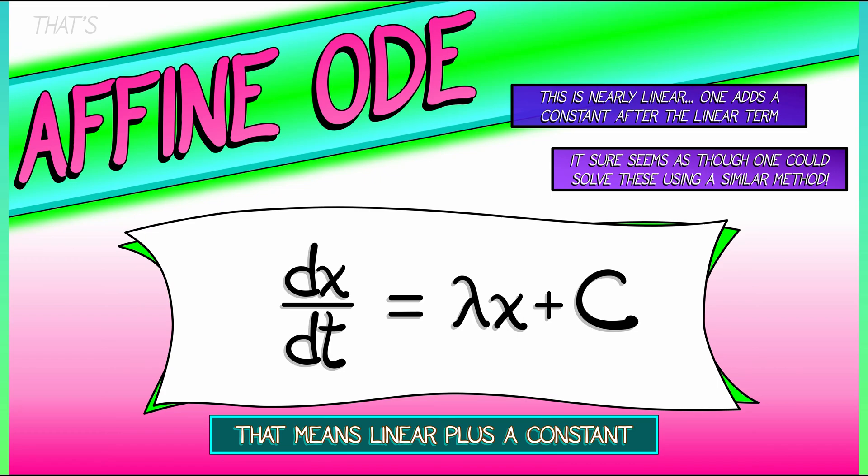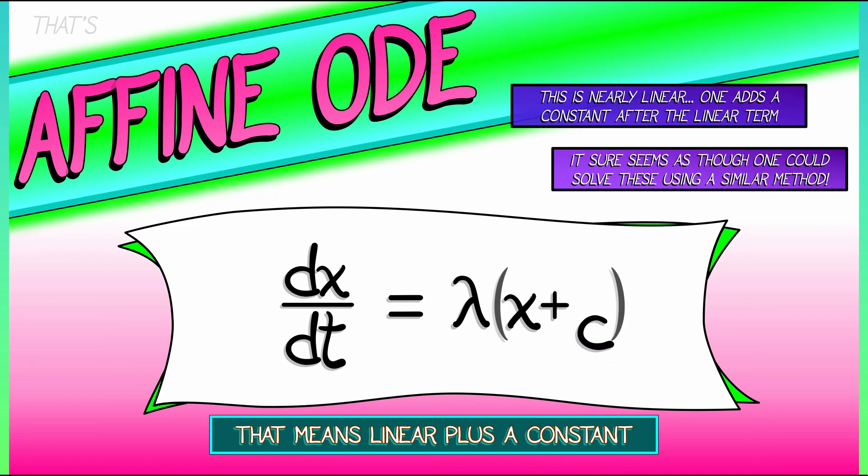What we're going to do is factor a lambda out of that constant, capital C, so that what I really have on the right-hand side is lambda times quantity x plus a constant. I'll call that constant little c. I hope that's not too confusing. Now why are we doing that? Why are we factoring that out?